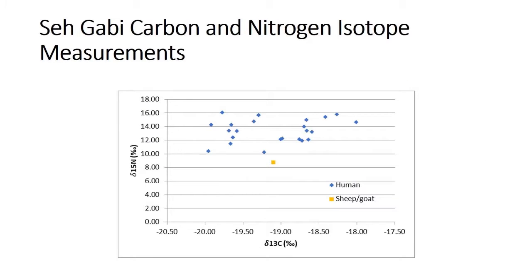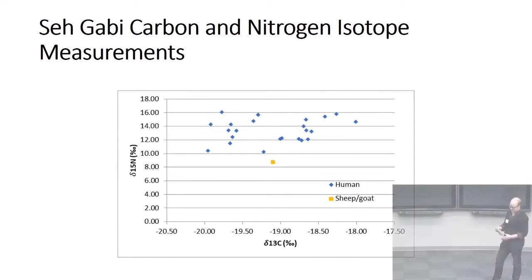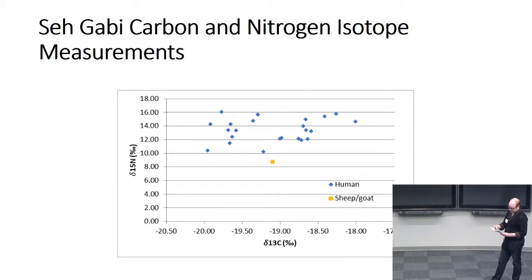In terms of our results, the carbon isotope measurements place subsistence at the site as being predominantly focused on C3 plants — typical agricultural crops or agricultural products.